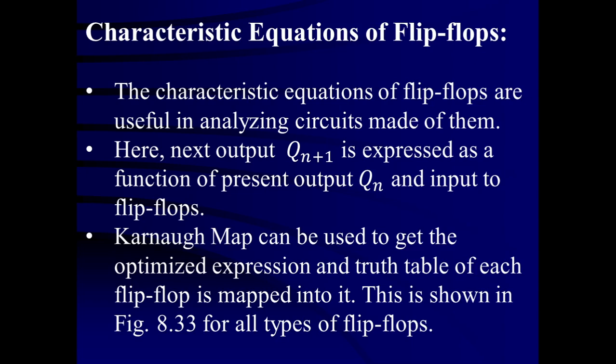The Karnaugh map is a function of the present output as well as the inputs. For SR flip-flop there are two inputs, S and R, and the present output is Qn. So the next output Qn+1 is a function of three variables: S, R, and Qn. That way, a three-variable Karnaugh map can be utilized. For D flip-flop and T flip-flop, the input is one — either D or T — and the present output is Qn, so a two-variable Karnaugh map, with only 4 locations (2²), can be utilized.